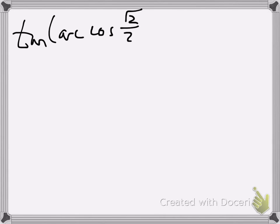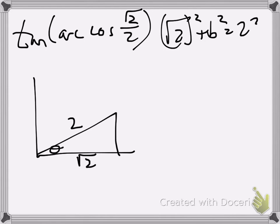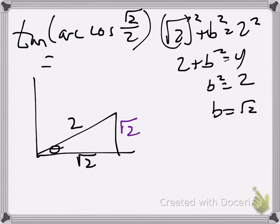Let's look at another one. The tangent of arc cosine of root 2 over 2. Again, I'm going to draw my right triangle. I know cosine is adjacent over hypotenuse, so I'm going to make my adjacent side root 2, my hypotenuse 2. Then I'm going to use the Pythagorean theorem to set up that relationship. Root 2 squared plus b squared equals 2 squared. I'm going to solve for b. b squared has to be 2, so b has to be root 2. Tangent is opposite over adjacent, root 2 over root 2, which is 1.